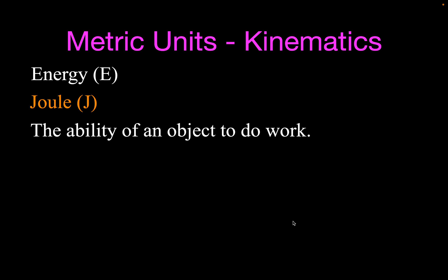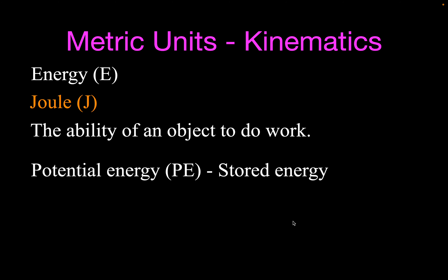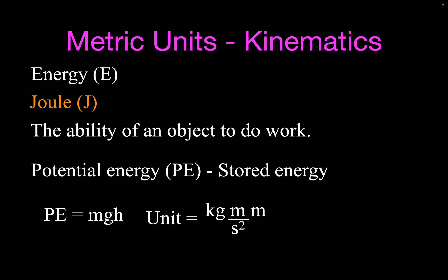Now let's talk about potential energy. Gravitational potential energy is stored energy due to an object's position. The equation is mgh — mass times the gravitational acceleration (meters per second squared) times height (in meters). You can see that the units work out to kilogram meter squared per second squared once again, and we call that the joule. So whether you multiply force times distance or mass times velocity squared, you end up with the same unit.